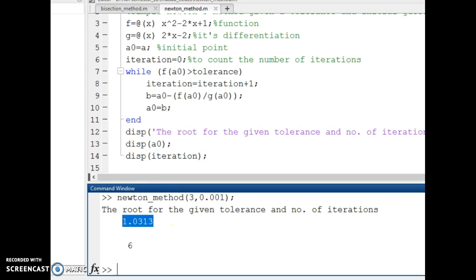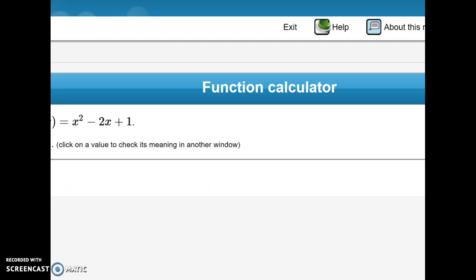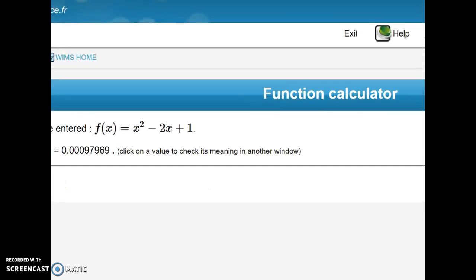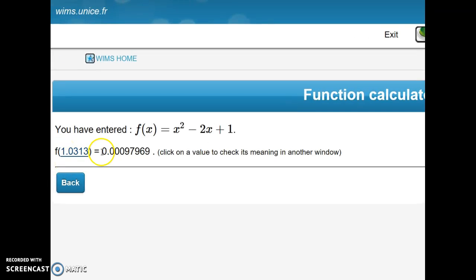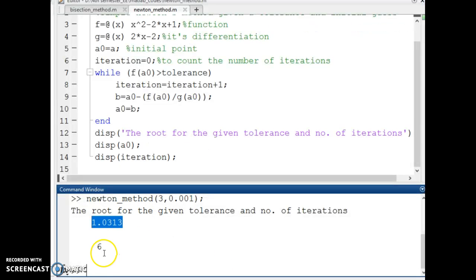Let's check this value. And the tolerance level was 0.001. And the functional value at 1.0313 is 0.00097969. So this is less than the required tolerance, so this root is acceptable. And also the minimum number of iterations required are 6.